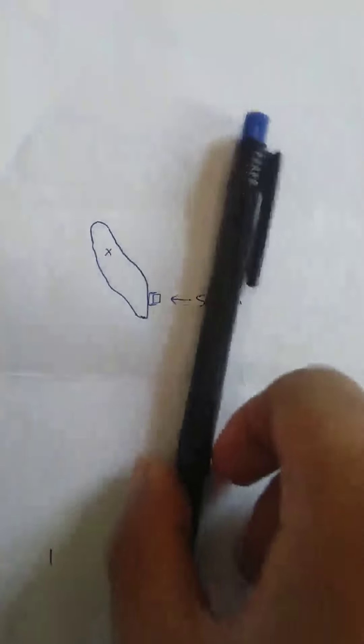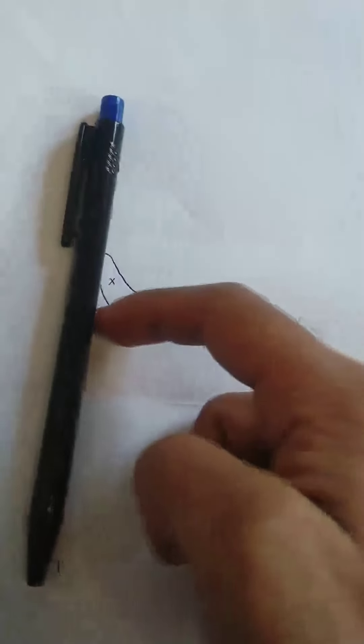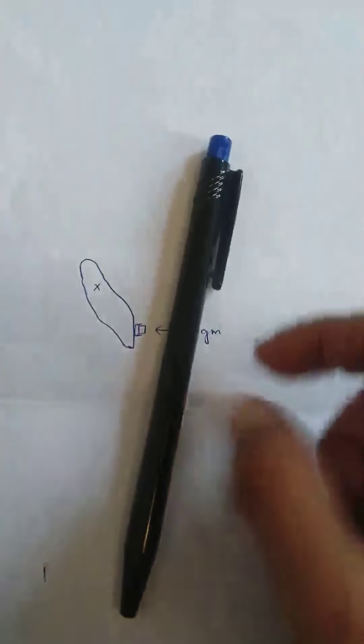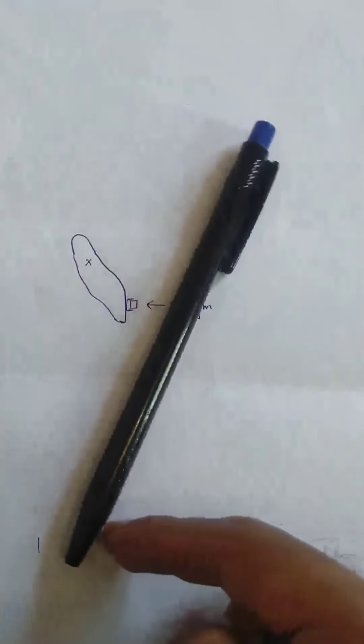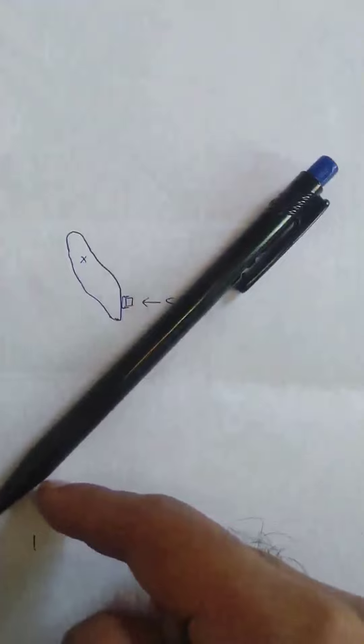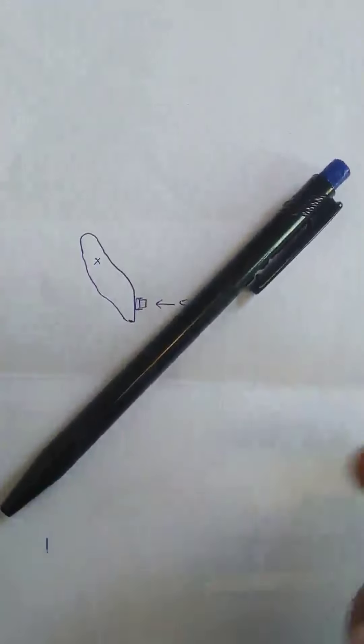Now let's see what we have to do with a pen. The center of resistance is in the center of the tooth. If I put the force here at this point, it's going to be in the center of the tooth. But if I put the force here, it's basically going to rotate. In orthodontic terms, it's called a tip.